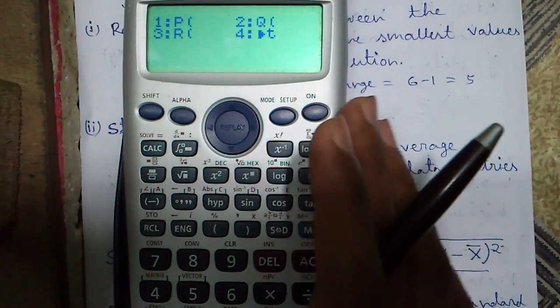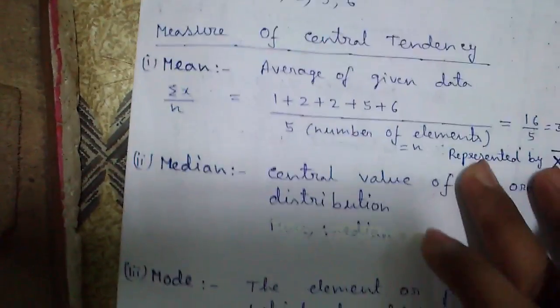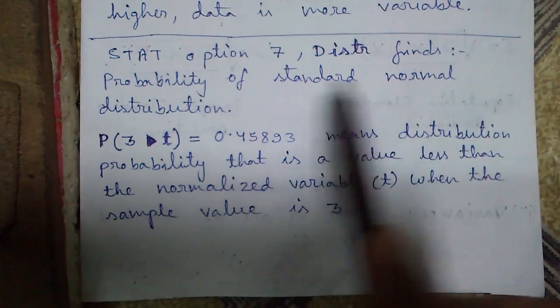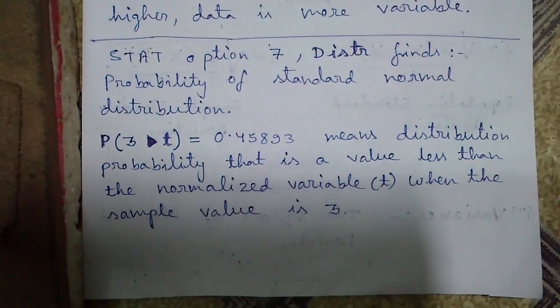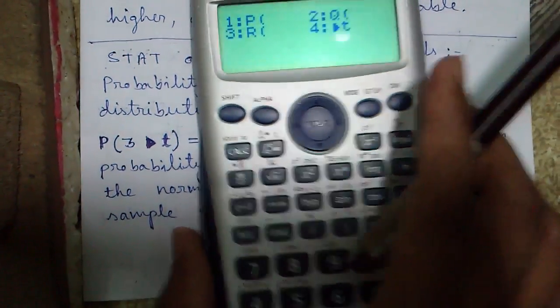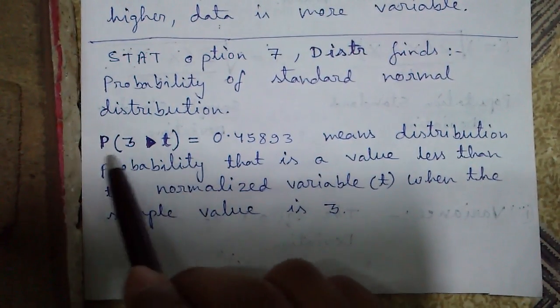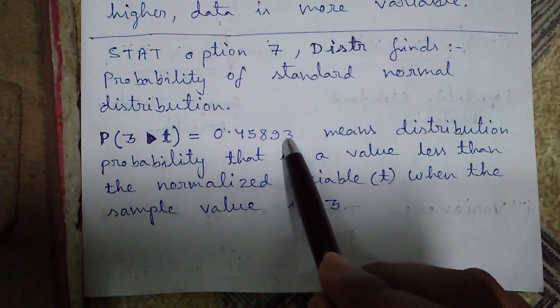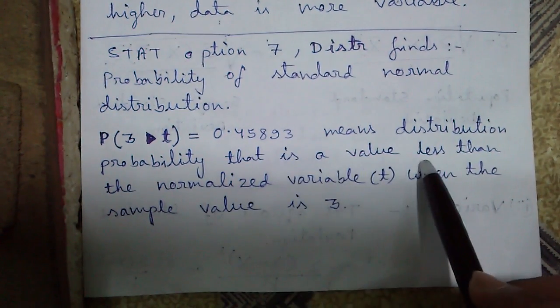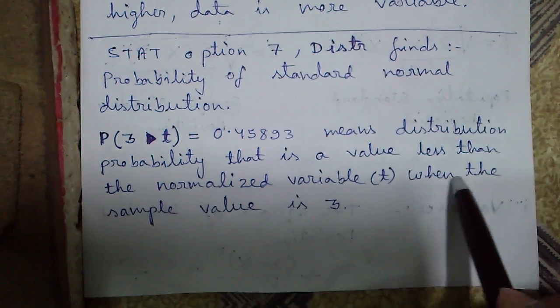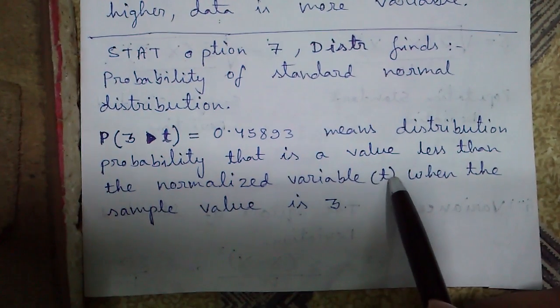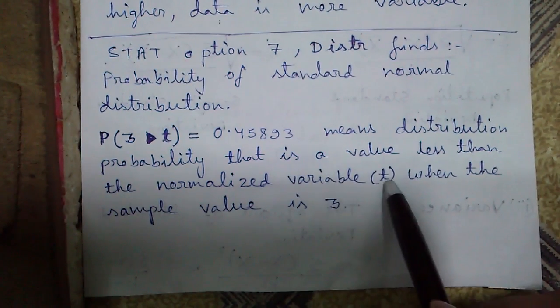Number 7. Distribution submenu. In distribution submenu, you can find out the probability of standard normal distribution. You can use these options, PQRT individually or in combination mode like this. P of 3 T is 0.45893 for our data means the distribution quality is that a value less than the normalized variable T when the sample value is 3. The normalized variable T is calculated using standard deviation S and mean.